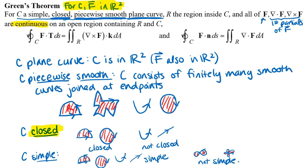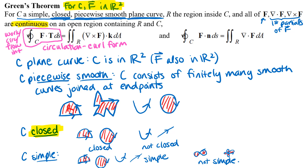Once you verify all conditions are met, there are two statements — the workhorses of Green's Theorem — that you'll use when applying it to a problem. The first is called the circulation-curl form. The integral on the left is a work/circulation/flow integral. The notation on the integral sign — a complete circle with an arrow — indicates the curve needs to be closed and oriented counterclockwise.